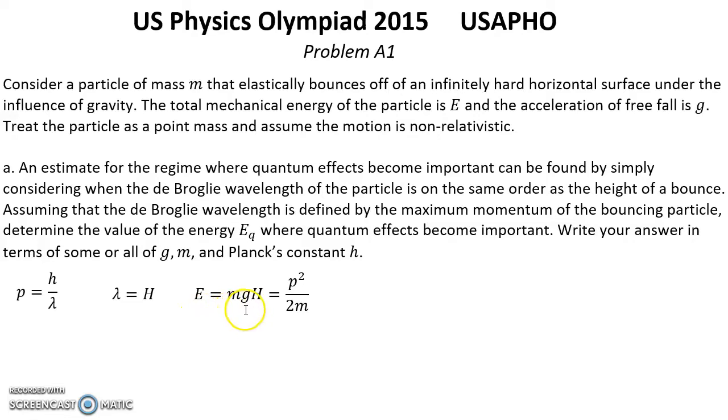Total energy of bouncing equal MGH which is equal to P square over 2M. Now we can use P as this expression and lambda equal H. So we have this relation. And from here we can find what is height H. For H we have this expression. And after all energy equals this formula. That's root 3 from MGH square H square over 2. This is the answer for question A.